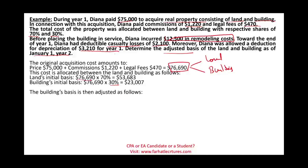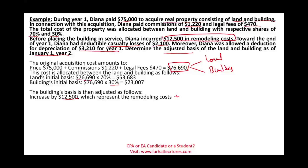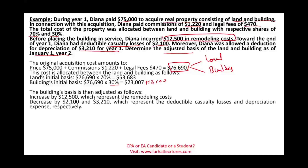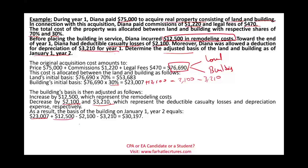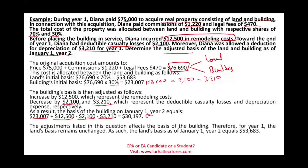The building's basis is then adjusted: before placing it in service, Diana incurred $12,500 in remodeling costs (added to basis); she had a deductible casualty loss of $2,100 (subtracted); and depreciation of $3,210 (subtracted). Adjusted building basis = $23,007 + $12,500 − $2,100 − $3,210 = $30,197. The land basis remains unchanged at $53,683, since land is not depreciable and no casualty loss was applied to it.